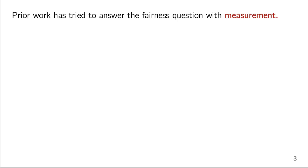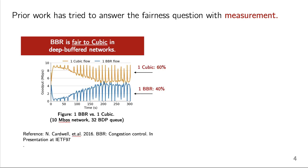In the past, there's been a bunch of work trying to answer this question using empirical measurement. We saw an example of this in Google's early presentations on BBR, where they showed that BBR is fair to cubic in networks with very large queues. So this is a reproduction of some of their findings. On this graph, the y-axis shows the goodput, and the x-axis is time for one cubic flow competing with one BBR flow. Here, the bottleneck queue size is quite big, it's 32 BDP.